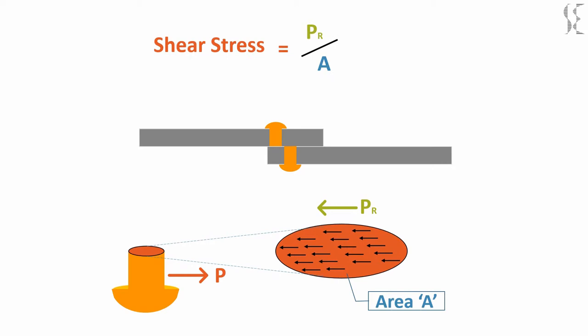Shear stress is generally denoted by Greek letter Tau. Unit of shear force is Newton or pound force, and unit of shear stress is pound force per area or Newton per mm square or pound force per inch square.